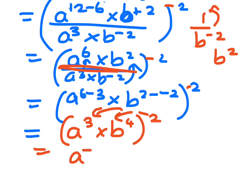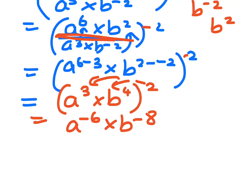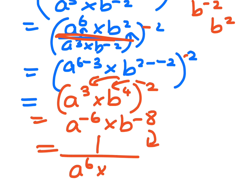Multiplying these indices, that's a to the minus 6 times b to the minus 8. Now I want to make it a positive index, so you bring it down to the bottom. So it's a⁶b⁸ when you do that.